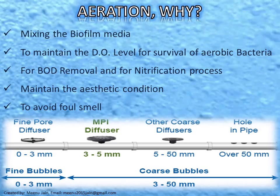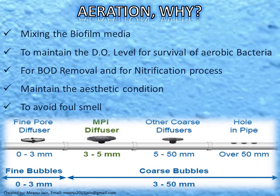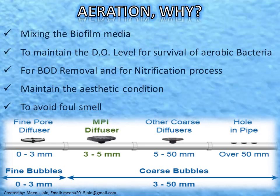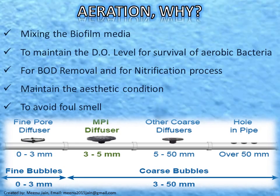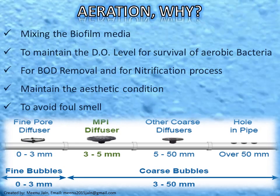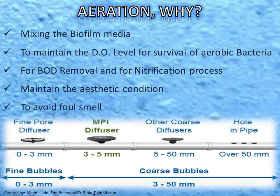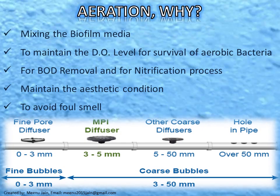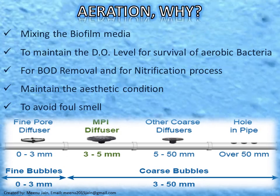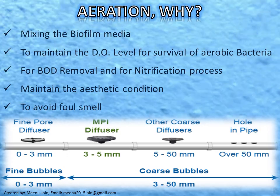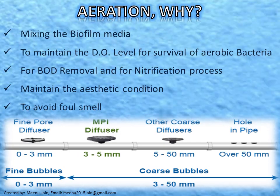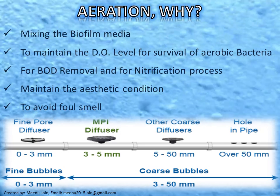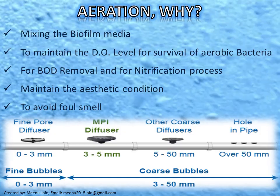The efficiency of oxygen transfer depends on many factors such as the type, size, and shape of the diffuser, the air flow rate, the depth of submergence, tank geometry including header and diffuser location, and wastewater characteristics. Typically, standard oxygen transfer efficiency increases with the depth of the MBBR tank, and 4.5 meters is generally considered the most common submergence depth for diffusers. Fine bubble diffusers have 0–3 mm bubble size, medium pore diffusers 3–5 mm, and coarse bubble diffusers 5–50 mm.